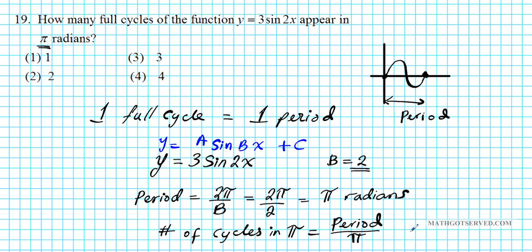Okay? So number of cycles in pi is simply given by pi over the period. So I'm sorry. I meant to say pi over the period. Okay? Pi over the period. Because we're looking for how many periods in pi. So pi over the period is pi, the same length. So the answer is 1. Okay? Exactly the same measure. So answer is option number 1.